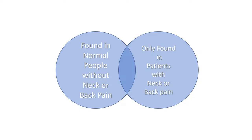If we look at this with Venn diagrams — and I know we all probably hated these in school, but they can sometimes be useful — we have things found in normal people with no neck or back pain, and we have findings on an image that are only found in patients with neck or back pain. We really want to focus on that latter part. The trick is: how do we get pieces of information off an MRI that are likely associated with someone having pain, and how do we ignore things on images that are unlikely to cause pain?